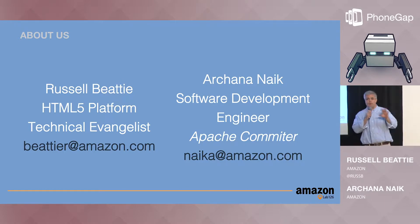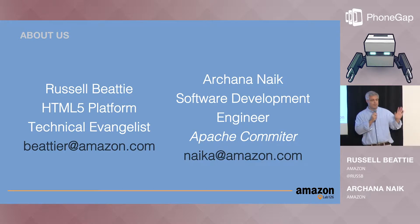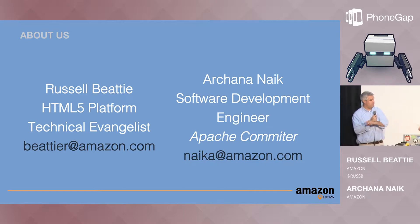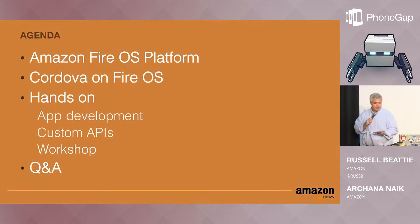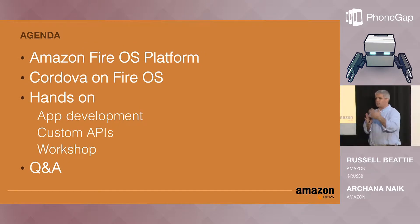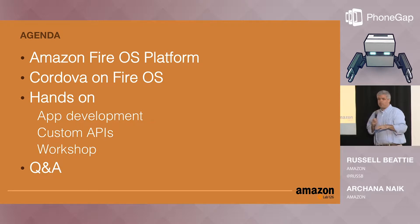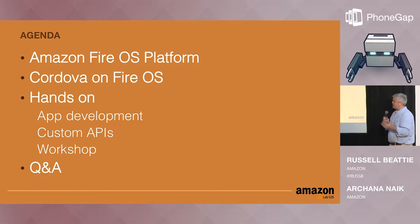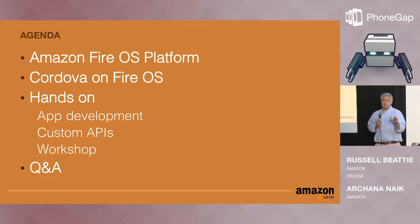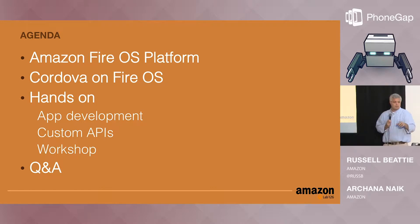So you have somebody who is an Apache committer — the person who can actually touch the code is here as well. Today we'll go through the slides and then do a workshop at the end where we'll get you set up on our devices. First, I want to talk about the Amazon Fire OS platform to give an overview, then Cordova on Fire OS, some code, best practices, custom Amazon APIs, and then the hands-on workshop.